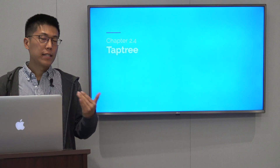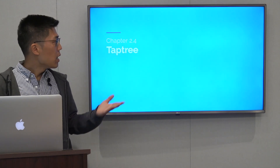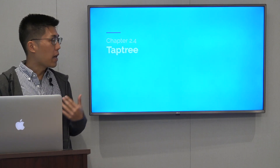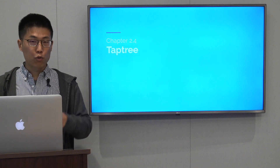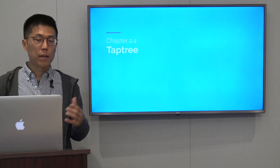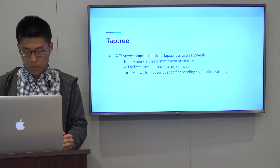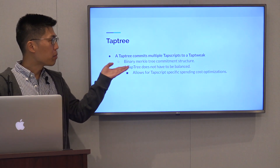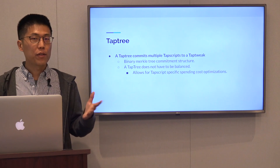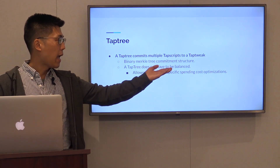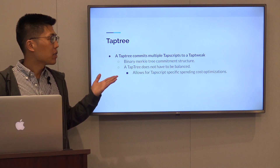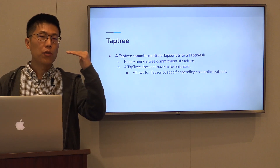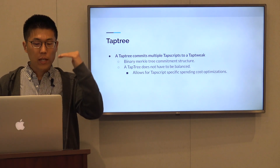Now that we've seen how we can commit a TAP script into a TAP root output, I'd like to talk about how we can commit multiple TAP scripts into a TAP root with a TAP tree, which is the structure we use to commit multiple TAP scripts into our output. We do that with a binary Merkle tree commitment structure. This TAP tree does not necessarily need to be balanced, and as we'll see in a second, this allows us to optimize for spending costs depending on what TAP script you think is most likely to be spent.